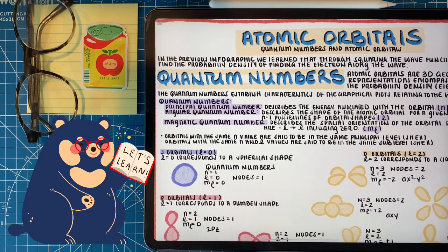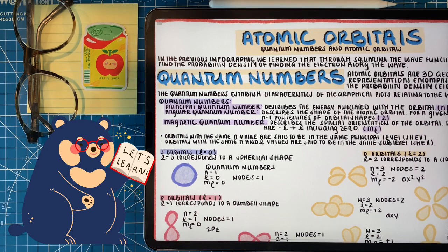Now let's talk about some of the characteristics that define atomic orbitals — we label these the quantum numbers. There are three main ones. We have the principal quantum number, which describes the energy associated with a given orbital, represented with the letter n. Since energy is quantized, we start with n = 1, then 2, then 3.